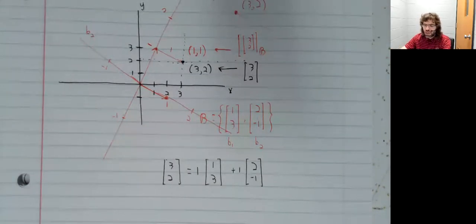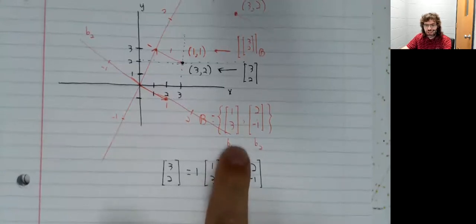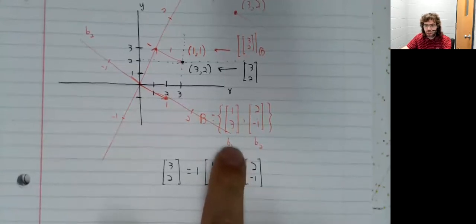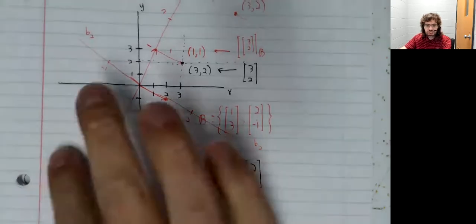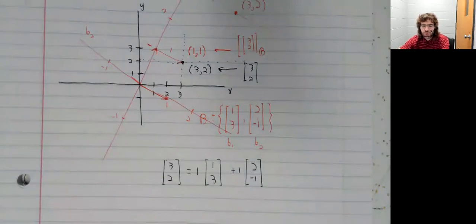So if you have a basis of R2 other than the standard one, and you're using that to define a coordinate system, you're really just working with coordinate vectors.